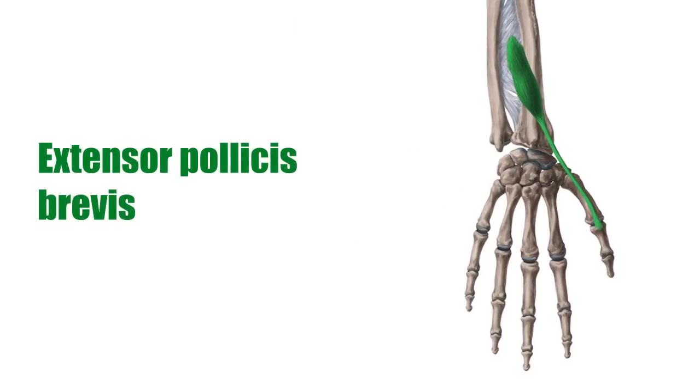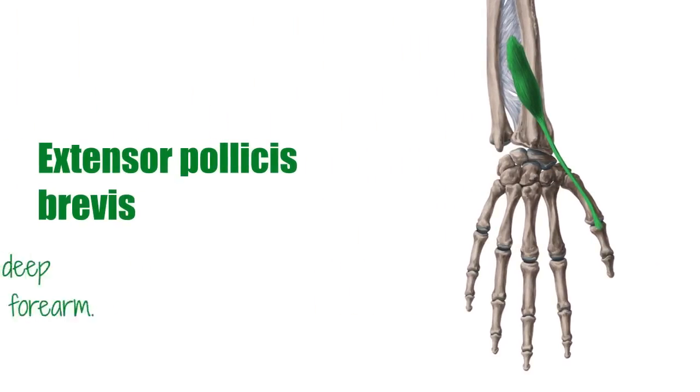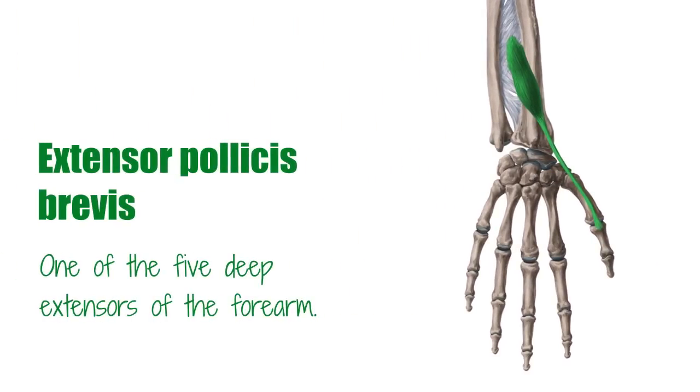The extensor pollicis brevis muscle is one of the five deep extensors of the forearm. This group of muscles can be easily palpated as they form the surface of the distal forearm and the wrist.